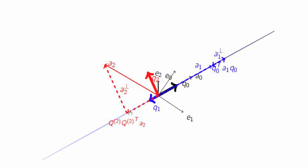If we take that dashed vector and subtract it from a2, we end up with the component of a2 perpendicular to the projection onto the space spanned by q0 and q1. That vector is then perpendicular to both q0 and q1. If we normalize that to have length 1 and view it as rooted at the origin, we end up with three vectors that are mutually orthonormal that together span the same space as do a0, a1, and a2.